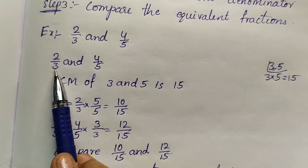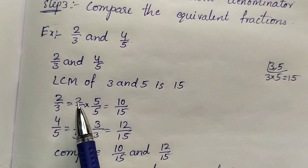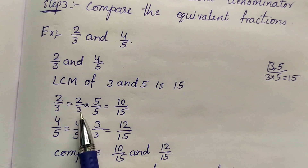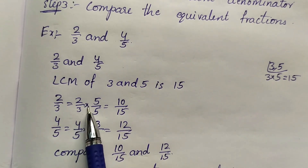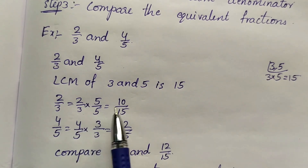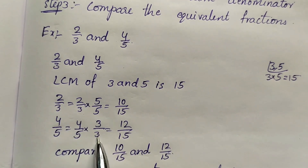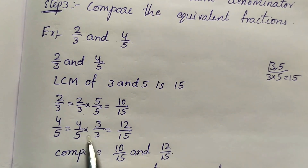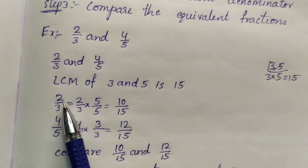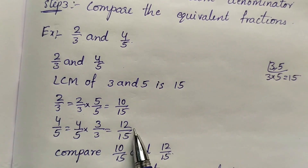We have to convert these denominators to 15. So 2 by 3 equals 2 by 3 into — to get 15 we have to multiply by 5 — so 2 by 3 into 5 by 5 equals 2 into 5 = 10, 3 into 5 = 15. Next, 4 by 5 equals 4 by 5 into — we have to multiply by 3 — 3 by 3 equals 4 into 3 = 12, 5 into 3 = 15. We got equivalent fractions: 2 by 3 is 10 by 15, and 4 by 5 is 12 by 15.